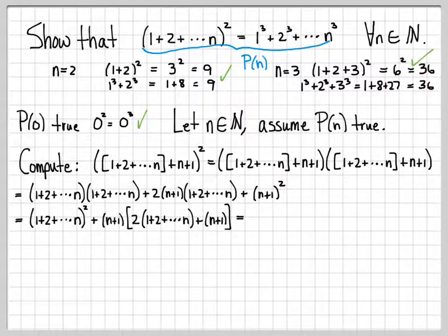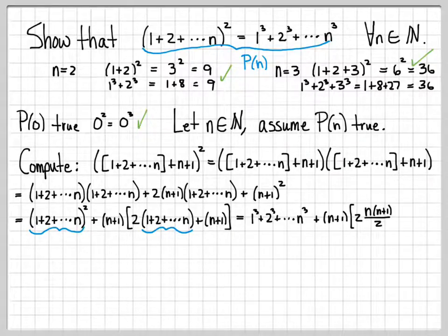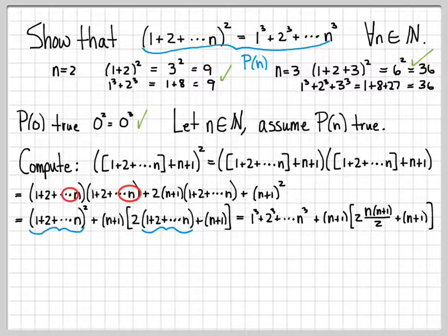Now we use our assumption that P(n) is true: we know (1+2+dot dot dot+n)² equals 1 cubed plus 2 cubed plus dot dot dot plus n cubed. Also, from a previous result, 1 plus 2 plus dot dot dot plus n equals n(n+1)/2. Substituting and letting the 2s cancel, we get 1 cubed plus 2 cubed plus dot dot dot plus n cubed, times (n+1) times (n plus 1). Note: there's a copy-paste error in the written work — there should be a plus n in several places, but the algebra is correct.